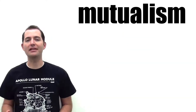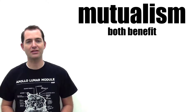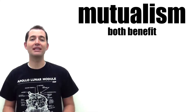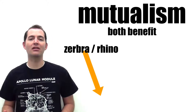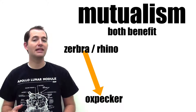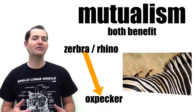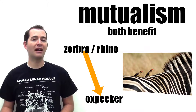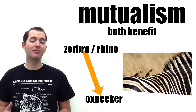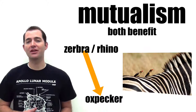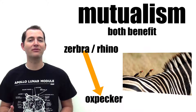Mutualism is a relationship between organisms where both benefit from the association. An example of mutualism takes place between zebras and rhinos and a small bird called an oxpecker. These birds will land on the backs of the zebras or the rhinos and will eat ticks or other parasites from off of the animal's skin. In this relationship, the birds have access to a food source and the animals have the ticks or parasites removed from their backs.